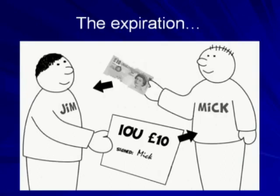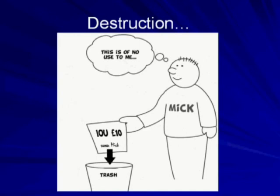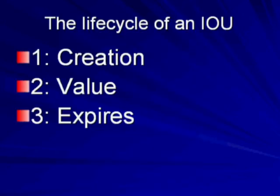When Mick repays the loan, Jim should no longer keep hold of the IOU, because Mick will no longer owe Jim any money. The IOU has now done its job — it has no further purpose, and Mick will now dispose of it. To summarise, the life cycle of an IOU is as follows. Stage 1: it gets created out of nothing — it did not exist previously and did not need to be obtained from anybody else. Stage 2: it has value as a legal record. Stage 3: when the loan is repaid, the IOU has no further meaning and expires.